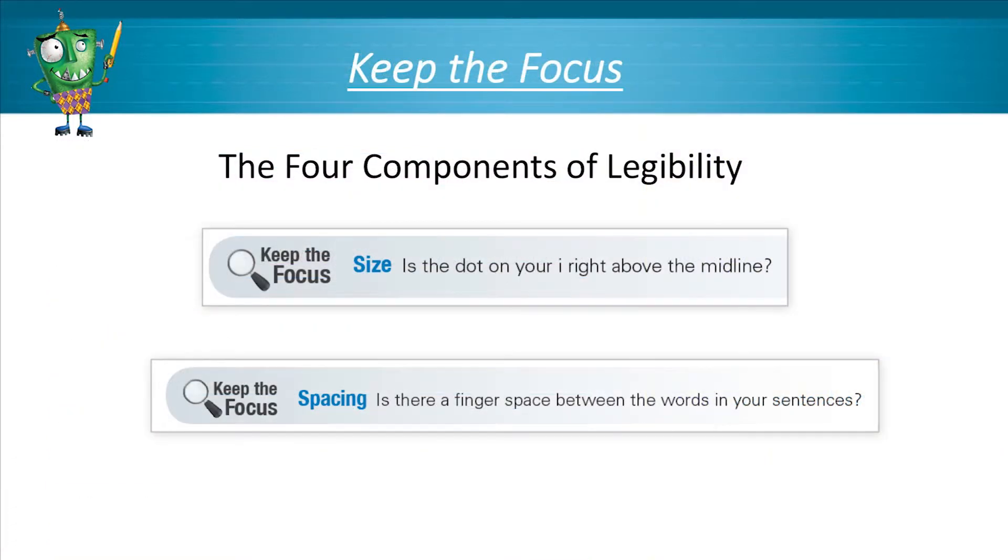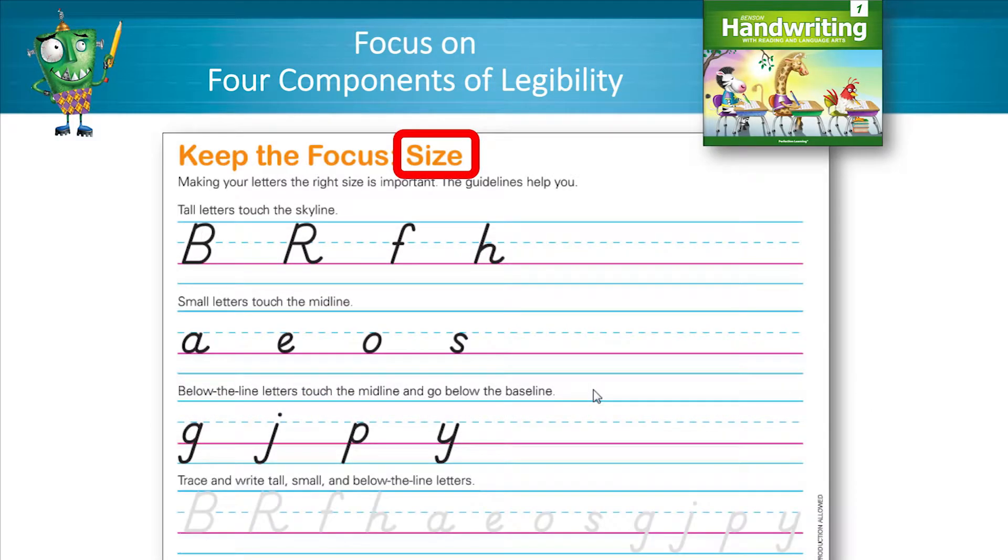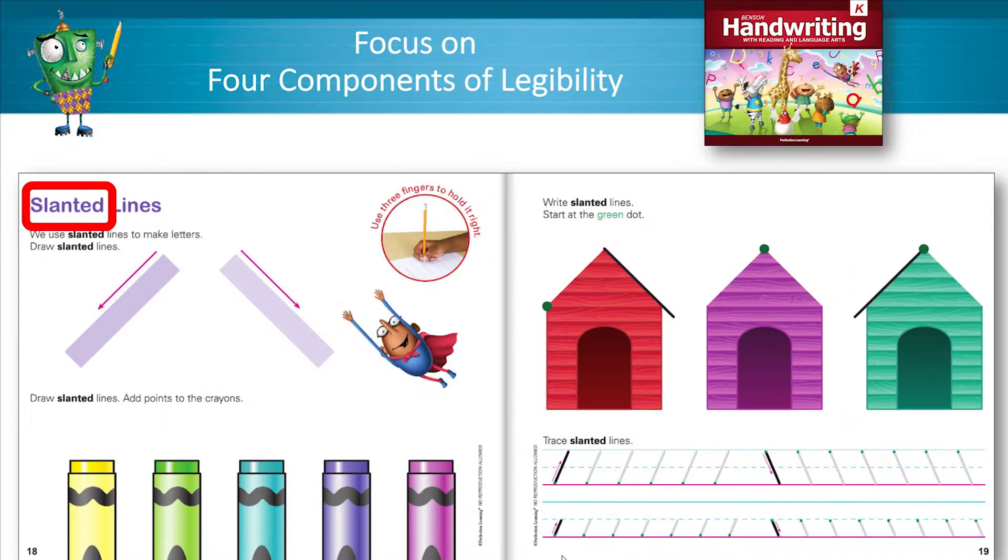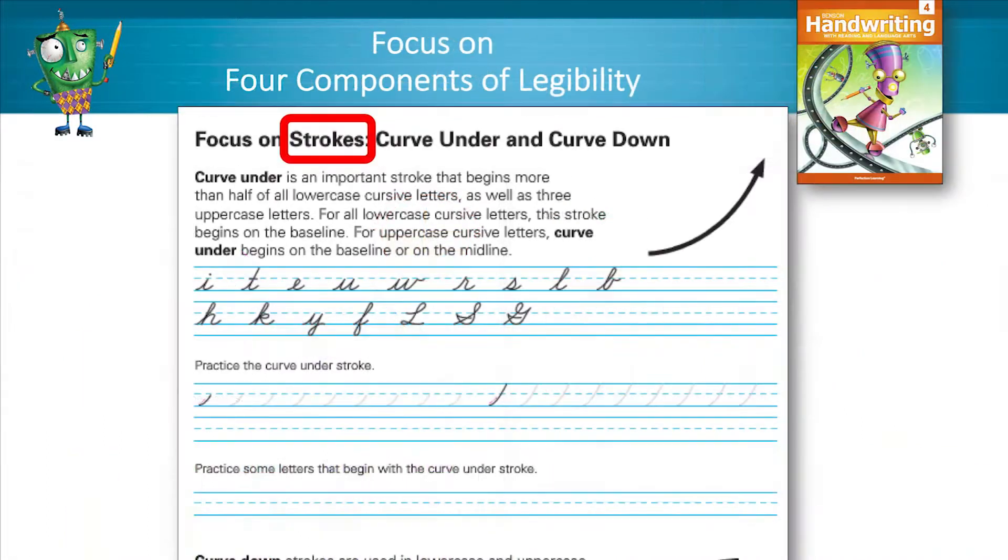One of the secrets behind Benson handwriting's success is the focus on the four components of legibility: Size, spacing, slant, and strokes.